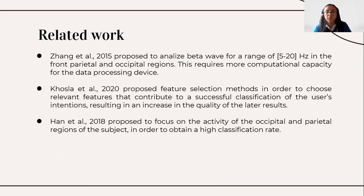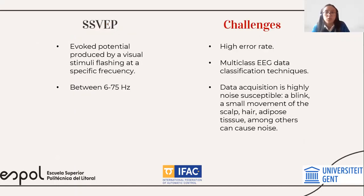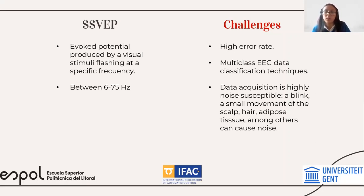Some experiments used lightbulbs as visual stimuli instead of flashing lights coming from the screen, as we did. In the related works, steady state visually evoked potential, or SSVEP, is a type of evoked potential produced by a visual stimulus flashing at a certain frequency — between 6 to 60 or 6 to 75 hertz. For the challenges, EEG data has a high error rate and is highly noise-susceptible. For example, a blink, a small movement of the scalp, hair, or adipose tissue can cause noise.